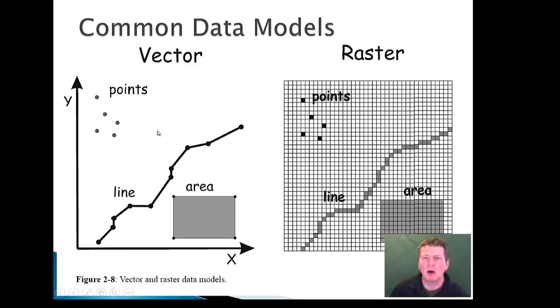So the vector models and raster models are the two common data methods. We have points, lines, and area. Points being individual locations. Lines being the connection of individual locations. And area being a complete cycle of points. So there would be five points here. One, two, three, four, and five to complete the polygon.